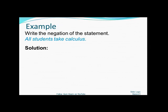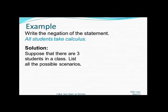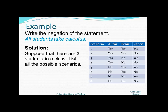So we're going to analyze this in great detail just to justify our solution. We're going to suppose that there are three students in the class and there are the objects under consideration. And we're going to list all the possible scenarios. So let's say our students are Alicia, Bo, and Caden. It's possible that all of them take calculus. In fact, that was the statement that we're analyzing. That would be the yes, yes, yes row one.